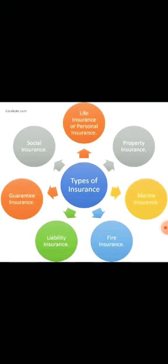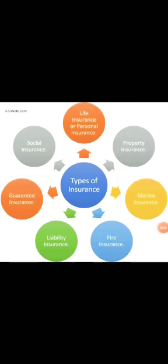Liability insurance covers the risks of liability against a third party. It covers the risk from the third party which an insurer might have to pay under certain circumstances — for example, injury to the property or person of a third party in a road accident, or employer's liability for injury or death of a worker while performing duty. This type of insurance is aimed at providing social security to the weaker sections of society.